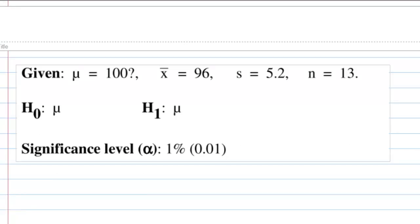Let's set up our hypothesis. The null hypothesis H0 is mu equal to 100. Since our data suggests that the mean mark is less than 100, our alternative hypothesis is mu less than 100.